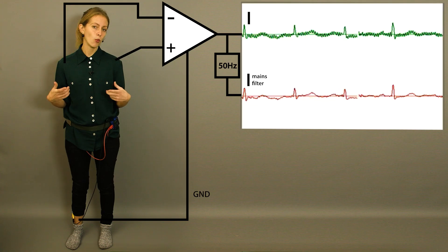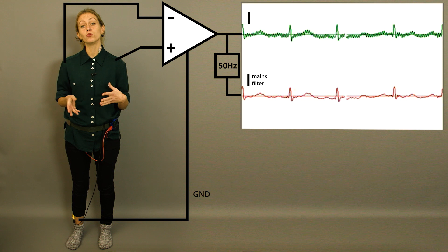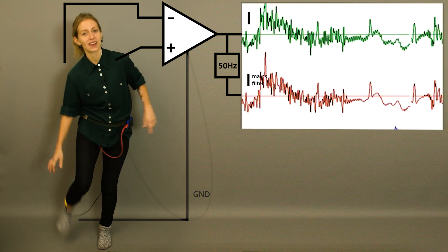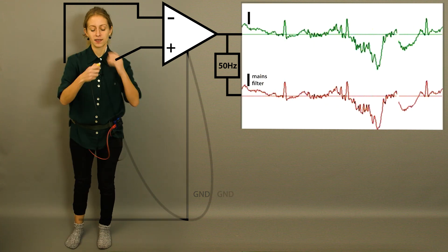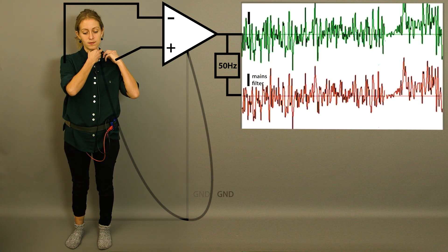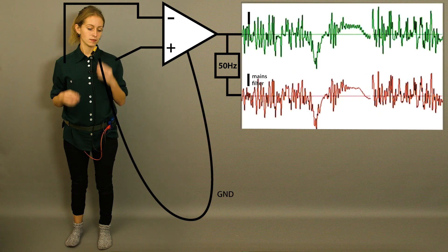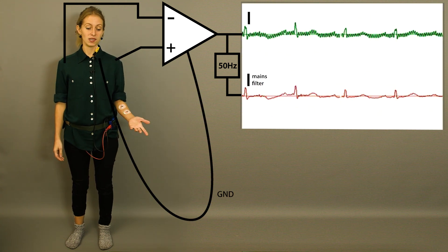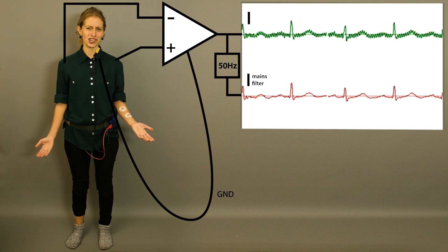So what will happen if I suddenly move ground to some other random position like for example here on my neck? Let's find out. We see that the signal doesn't change at all.